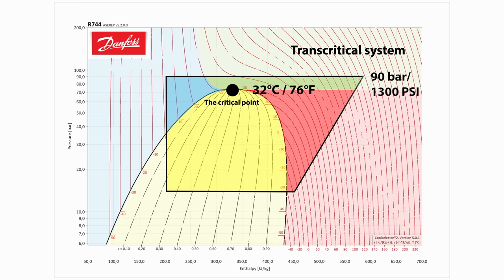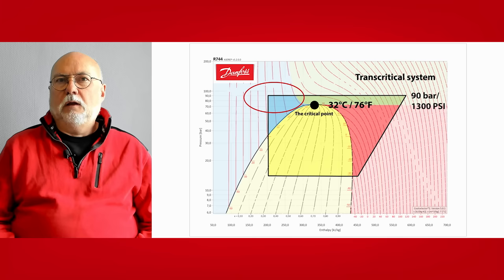Above the critical point, the refrigerant, the CO2, is not capable of condensing, changing phase back, so to speak, to the liquid phase because of the high pressure. And that gives us a few problems.